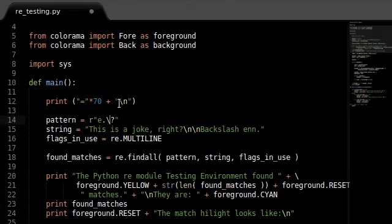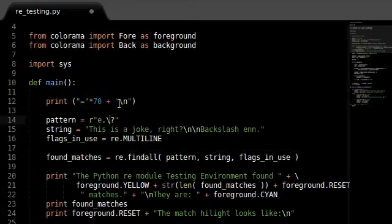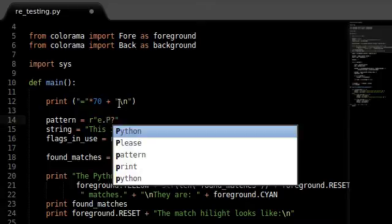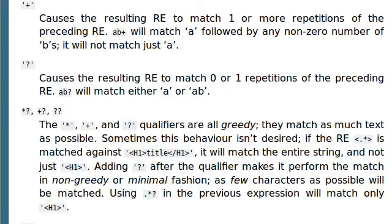Now this can be anything - this can be the backslash W, it can be a backslash D, it can be a backslash S, it can be a letter P. It can be anything. So that's the joy of the question mark. And when we look at the documentation, the asterisk, the plus sign, and the question mark qualifiers are all greedy.